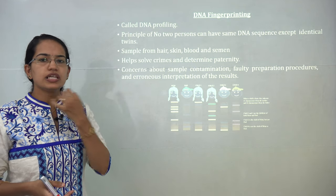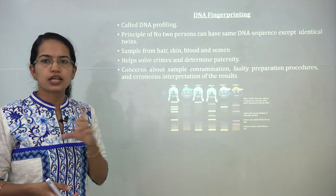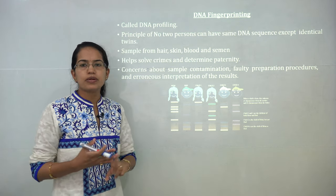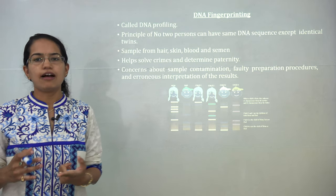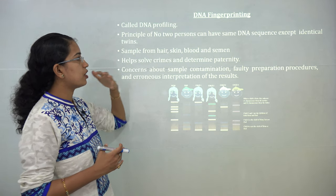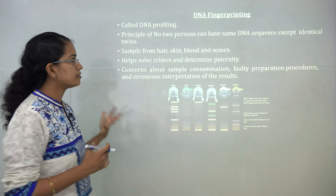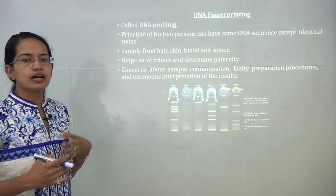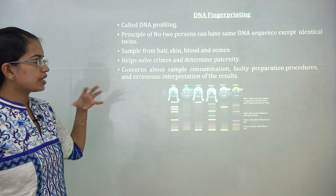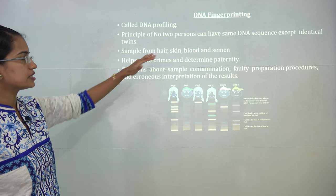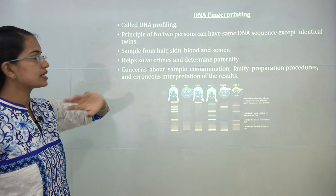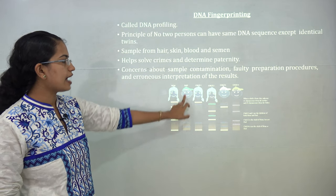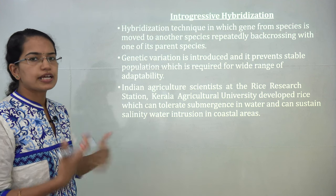DNA fingerprinting is based on each individual having a unique DNA signature. No two persons except identical twins have the same DNA. Samples can be obtained from hair, skin, blood, or semen, and it is used to solve crimes and determine paternity. It is also known as DNA profiling and can be used for establishing family hierarchies.